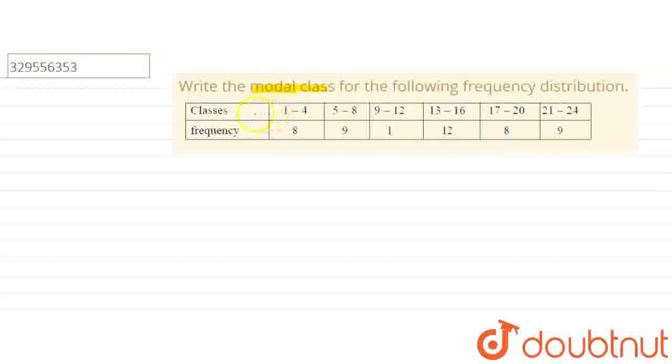Since there is a class limit given as 1 to 4 and 5 to 8, there is a break. 4 to 5 is not given as values. So we have a class limit. First, we will convert this to class boundary.